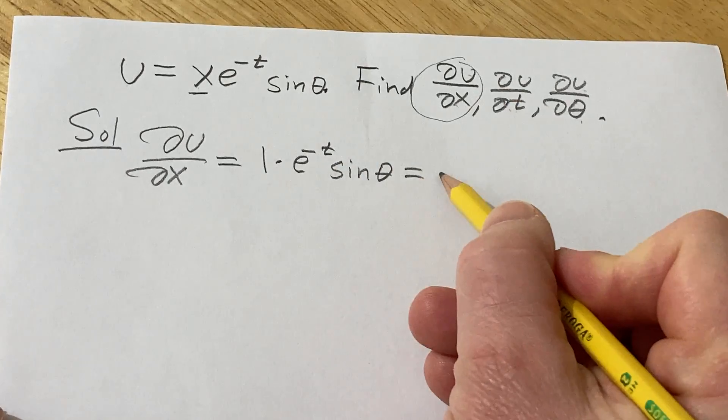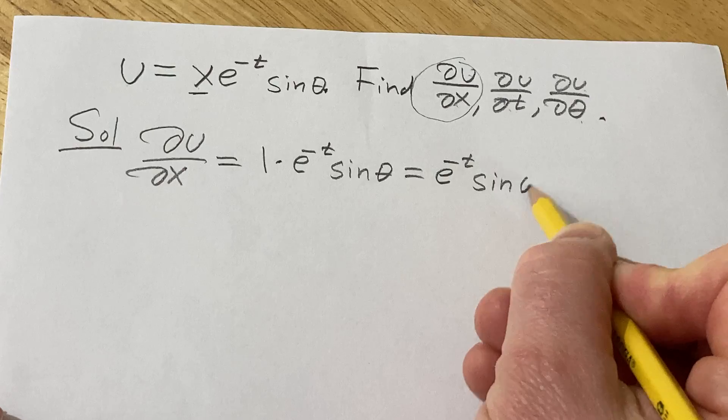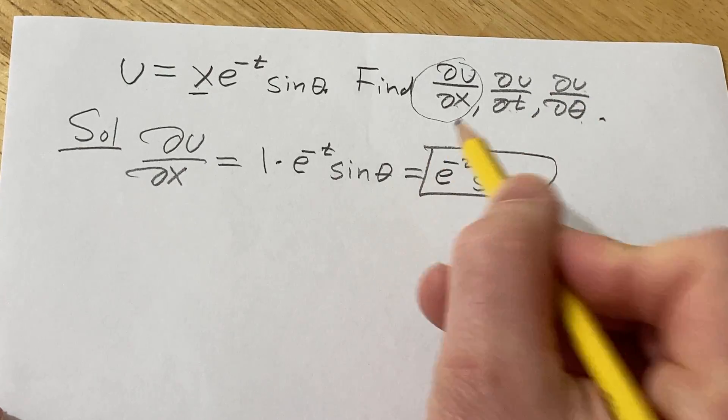So this is equal to e^(-t) times the sine of theta. One down, two to go.